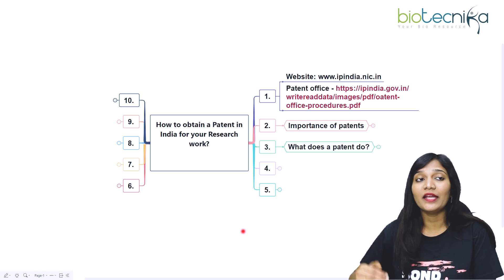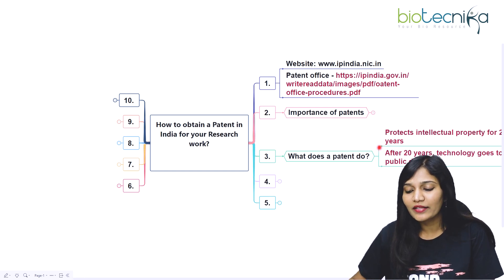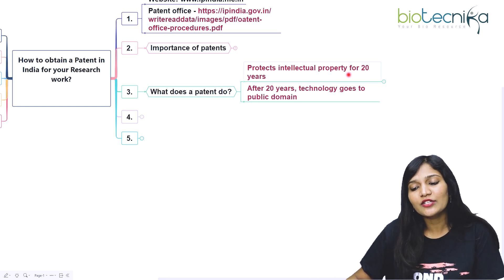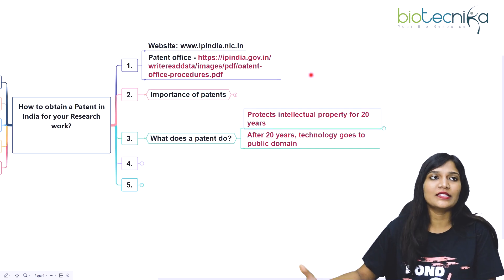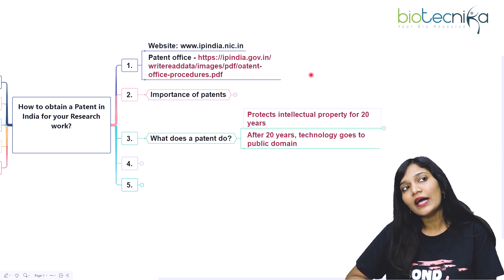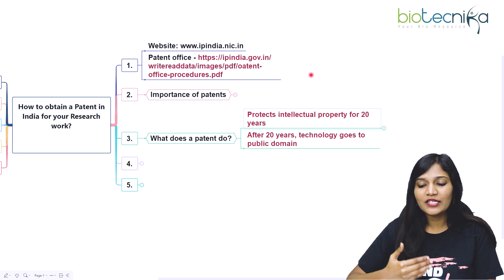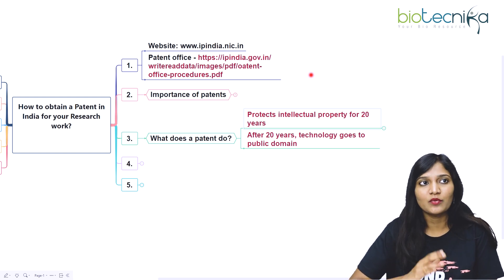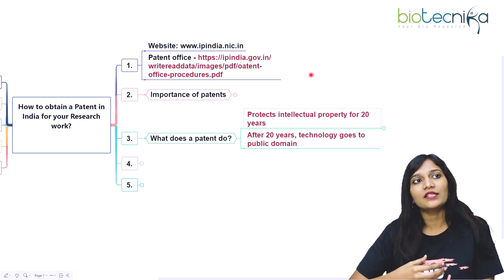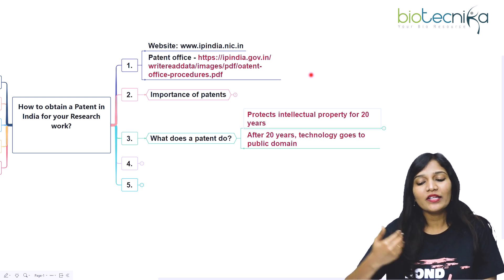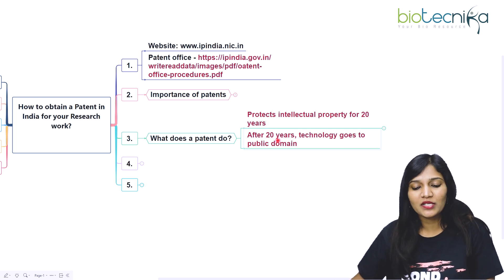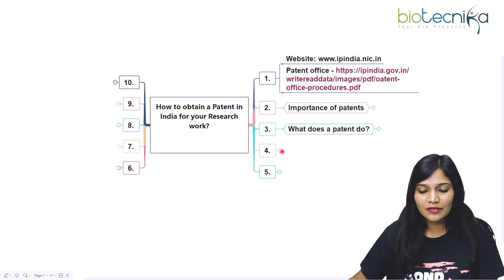Now let's talk about what a patent does. The main important thing is intellectual property rights — it protects your intellectual property for 20 years. For example, if you have discovered a drug, you can patent it for 20 years. After 20 years, the technology goes to the public domain. During those 20 years, if anybody wants to use the same protocols or products, they have to approach you first.